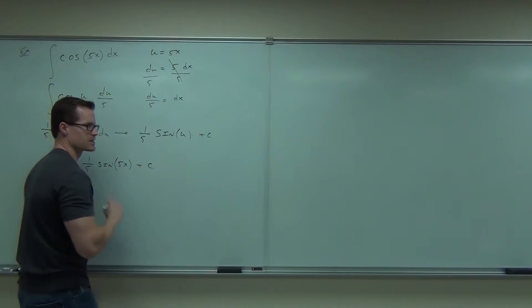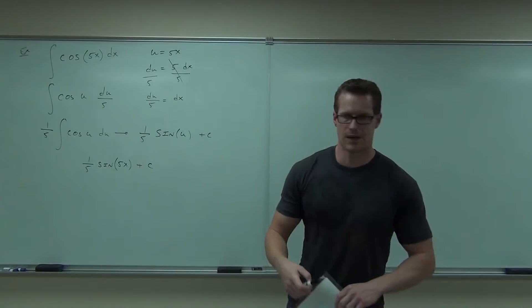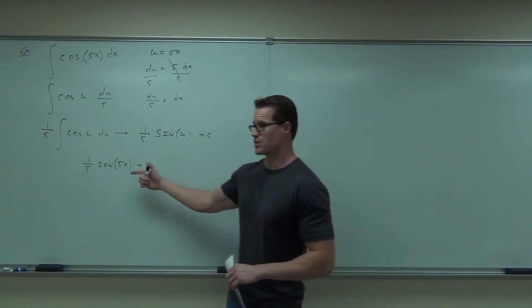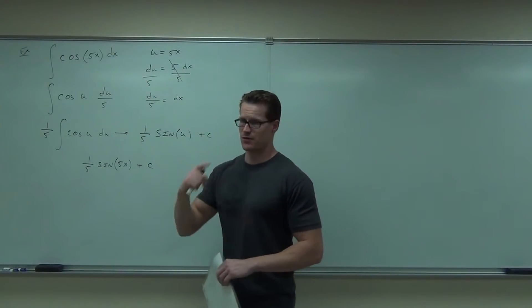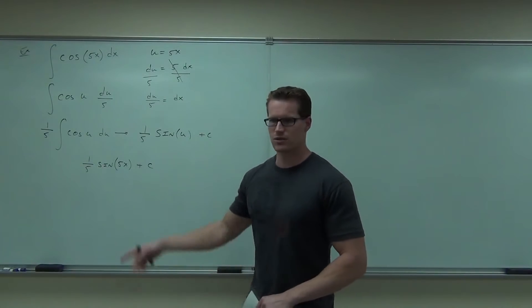And of course we've got that plus c at the back end saying that could be any constant and still work as a function. So that I take a derivative of it gives me back my cosine 5x. By the way, can you check your work? Absolutely. Take a simple derivative.